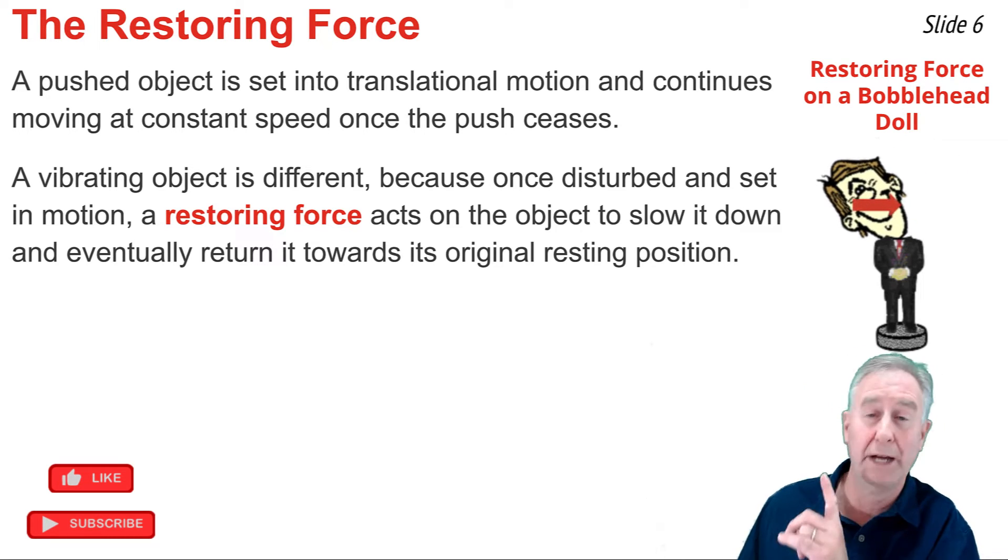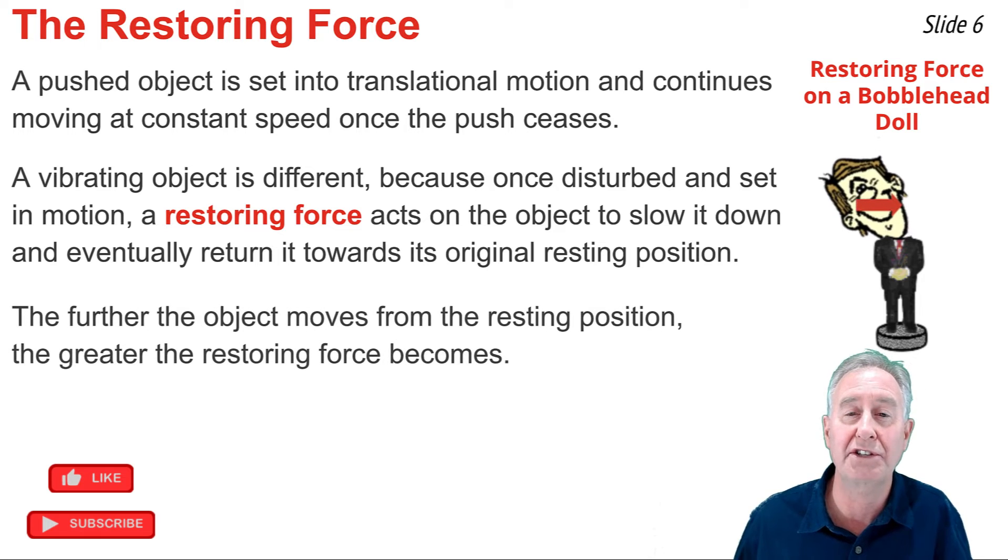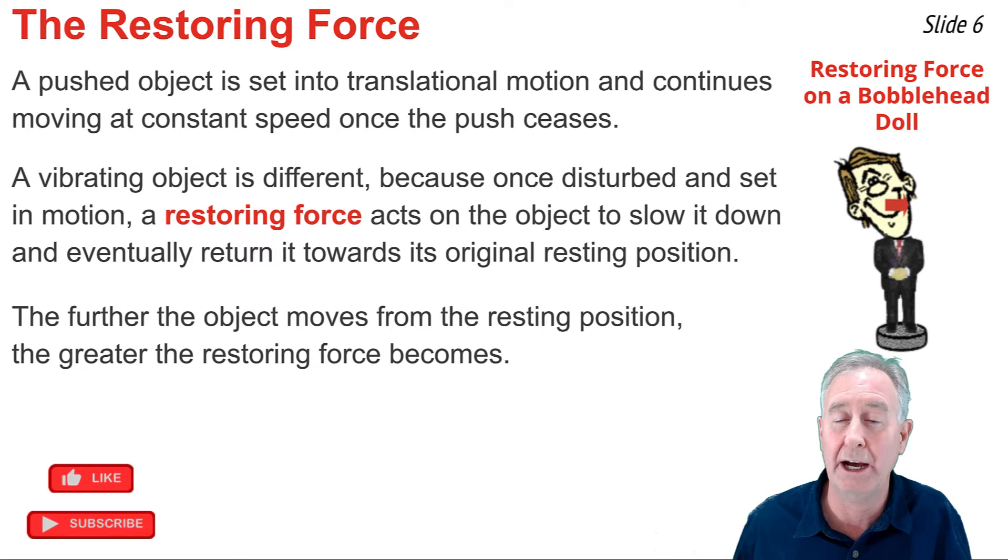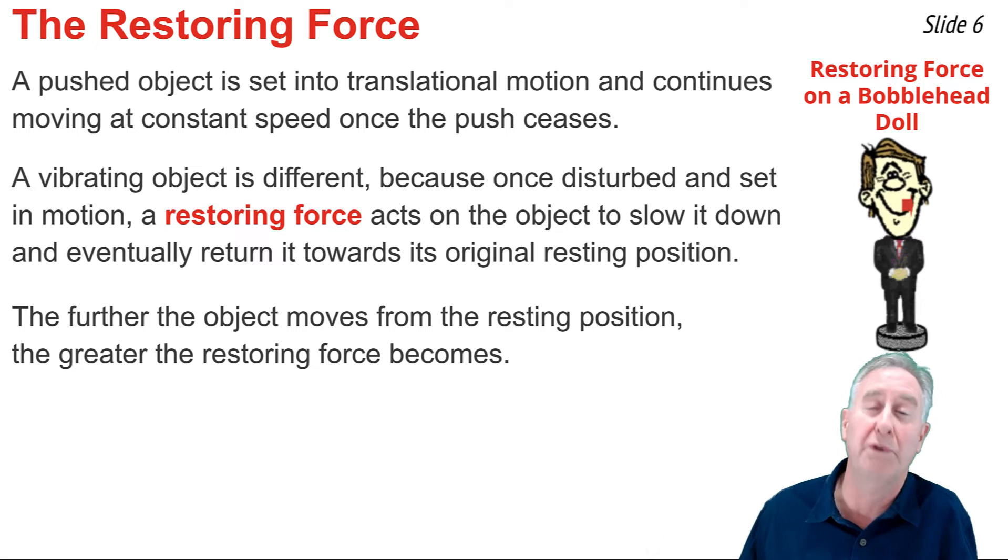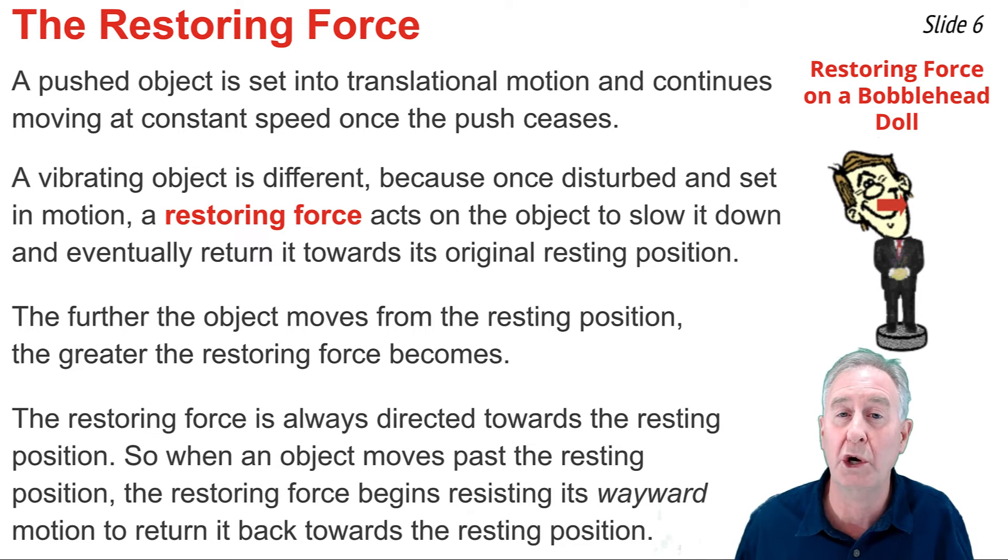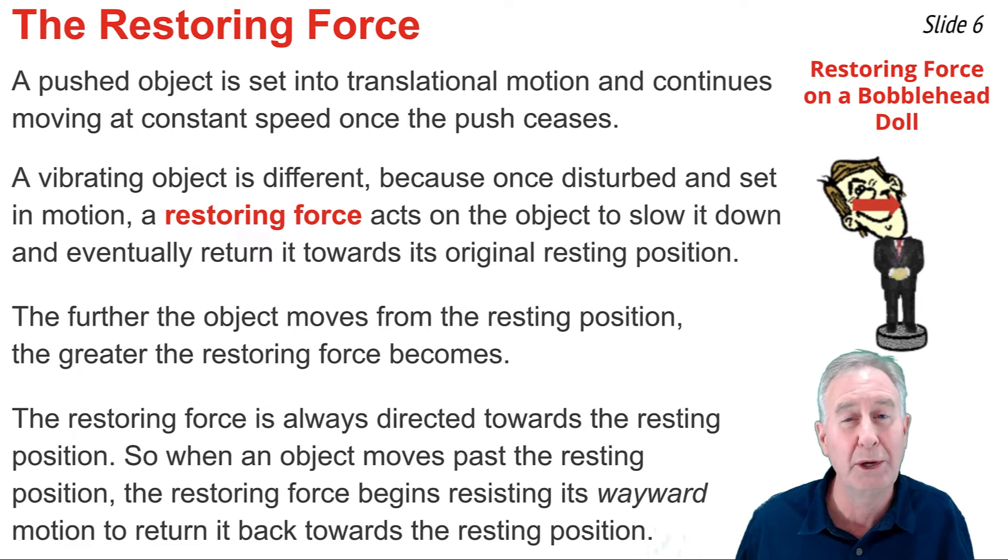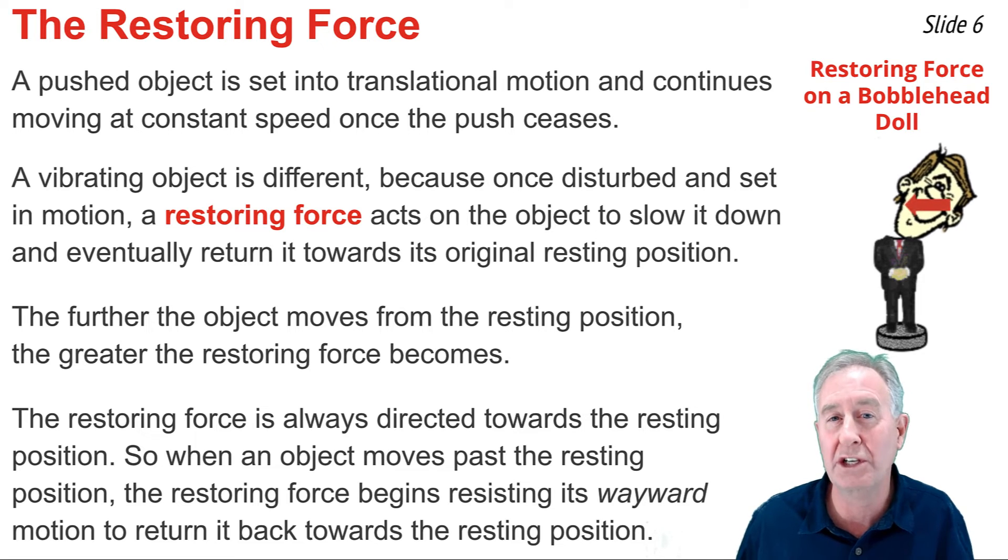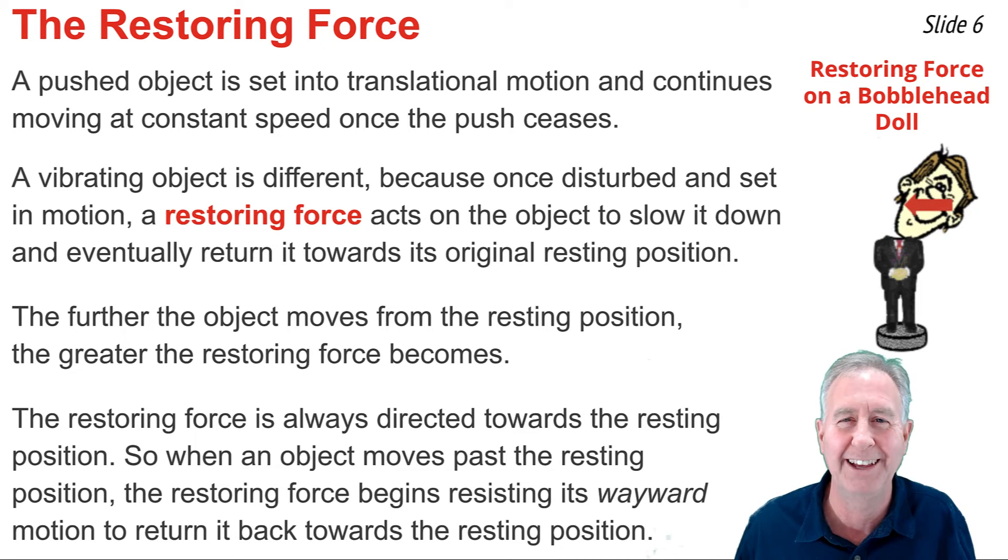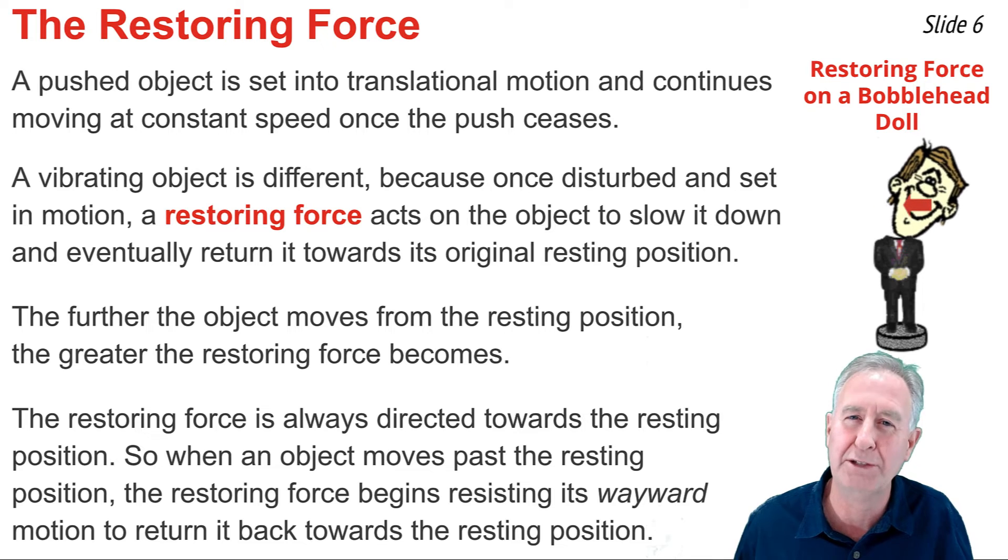The restoring force is represented by a red arrow on the above animation. There's two things that we'll notice about this restoring force. The first is that the strength of the force depends upon how far the vibrating object is from its resting position. The farther away the object gets from its resting position, the stronger the force and the closer it is to the resting position, the weaker the force. The second thing we'll notice is that the restoring force is always directed back towards the resting position. Even when the bobblehead dial vibrates past the resting position, we'll notice the restoring force changes its direction and resists the wayward motion of that bobblehead dial, slowing it down and moving it back towards its resting position. It's this restoring force that makes vibration possible, the vibration of an object about a fixed position.